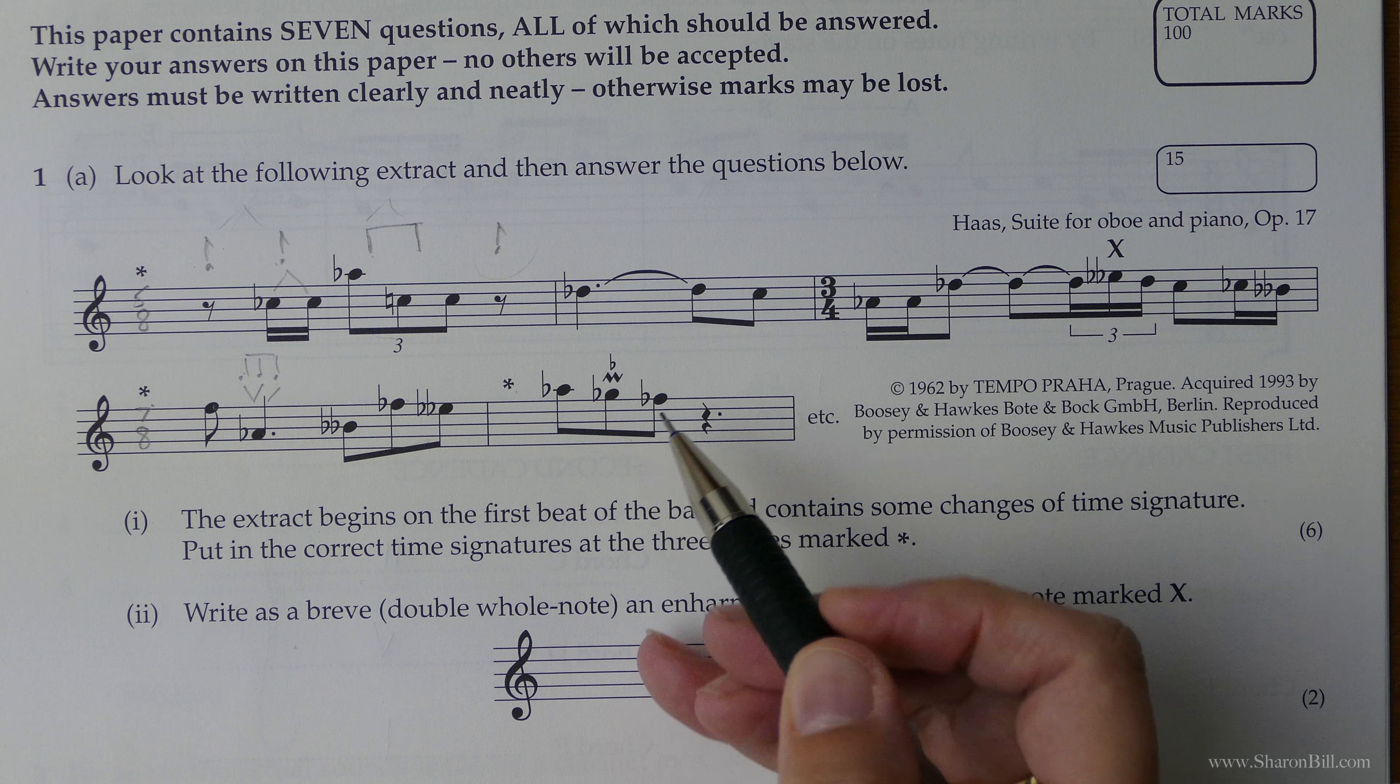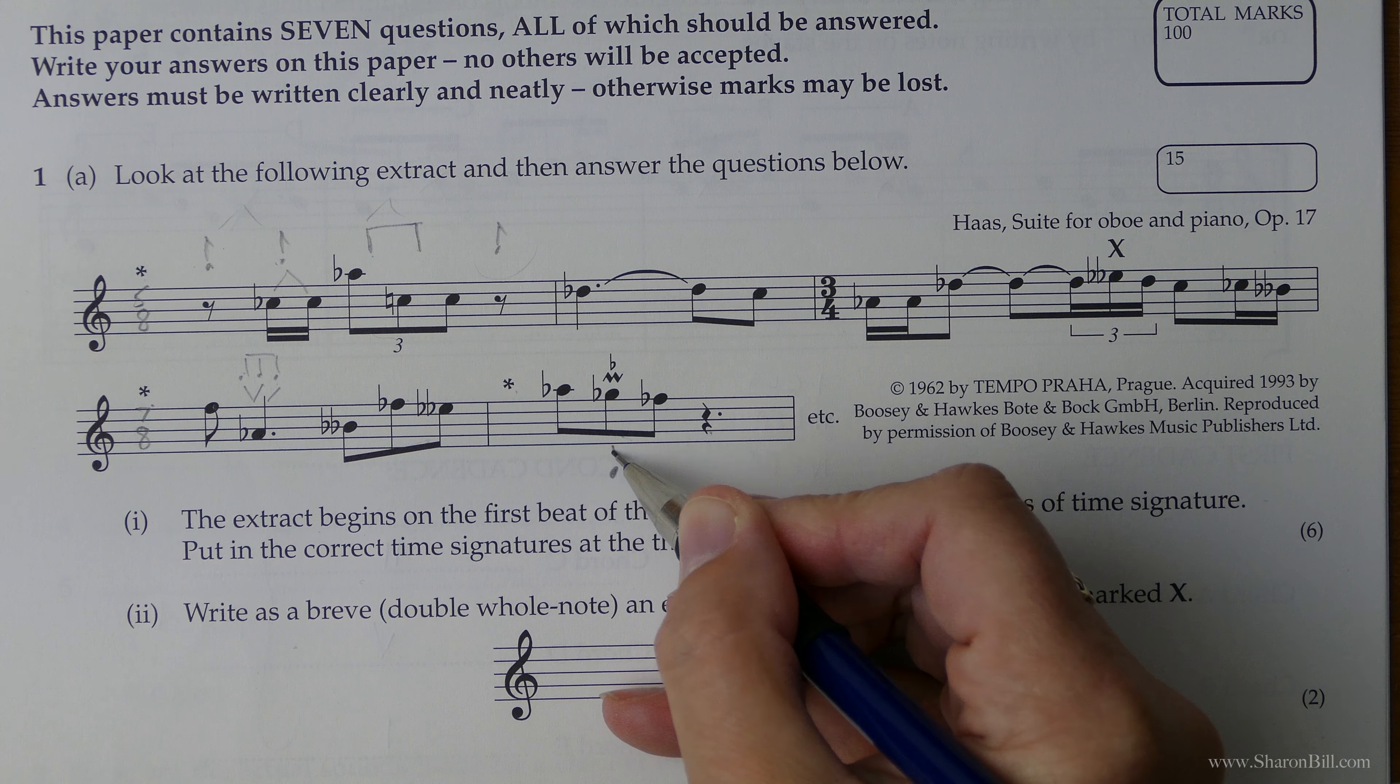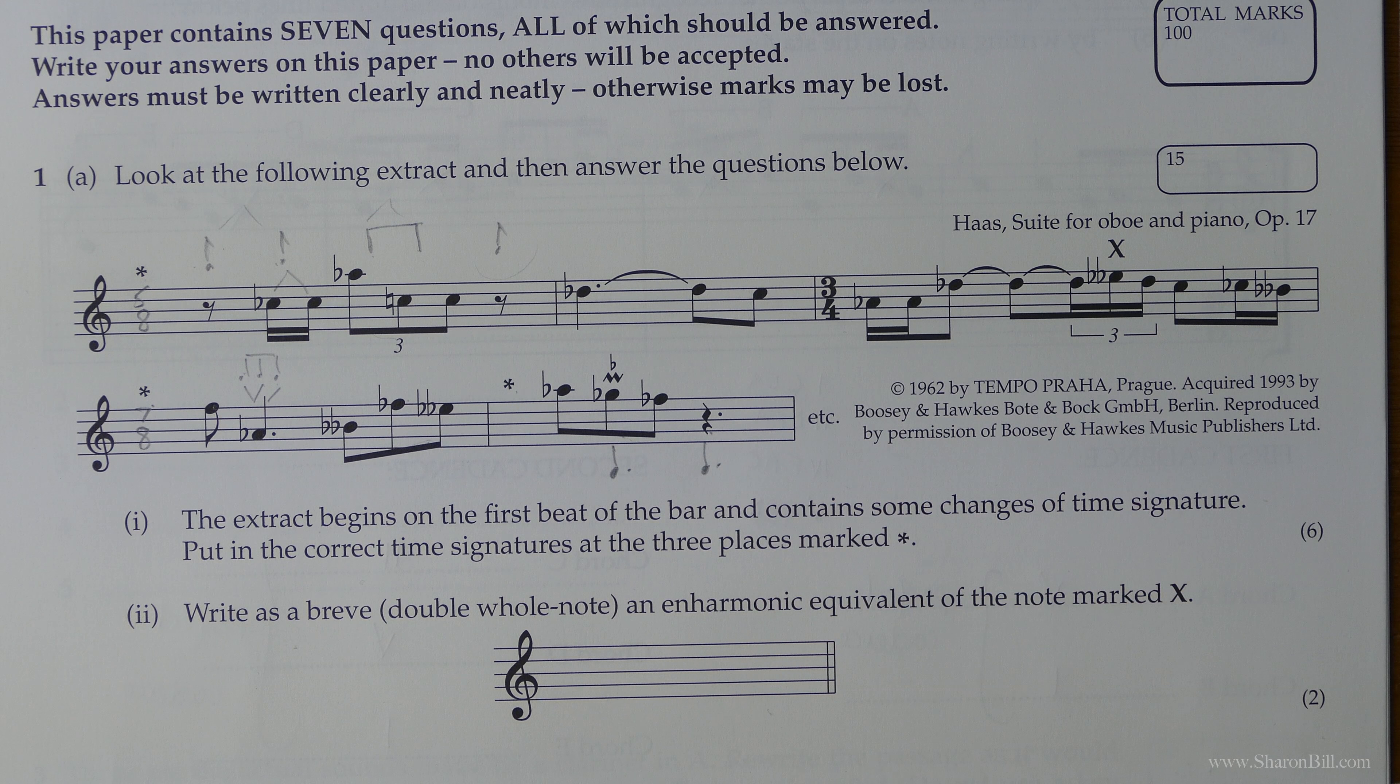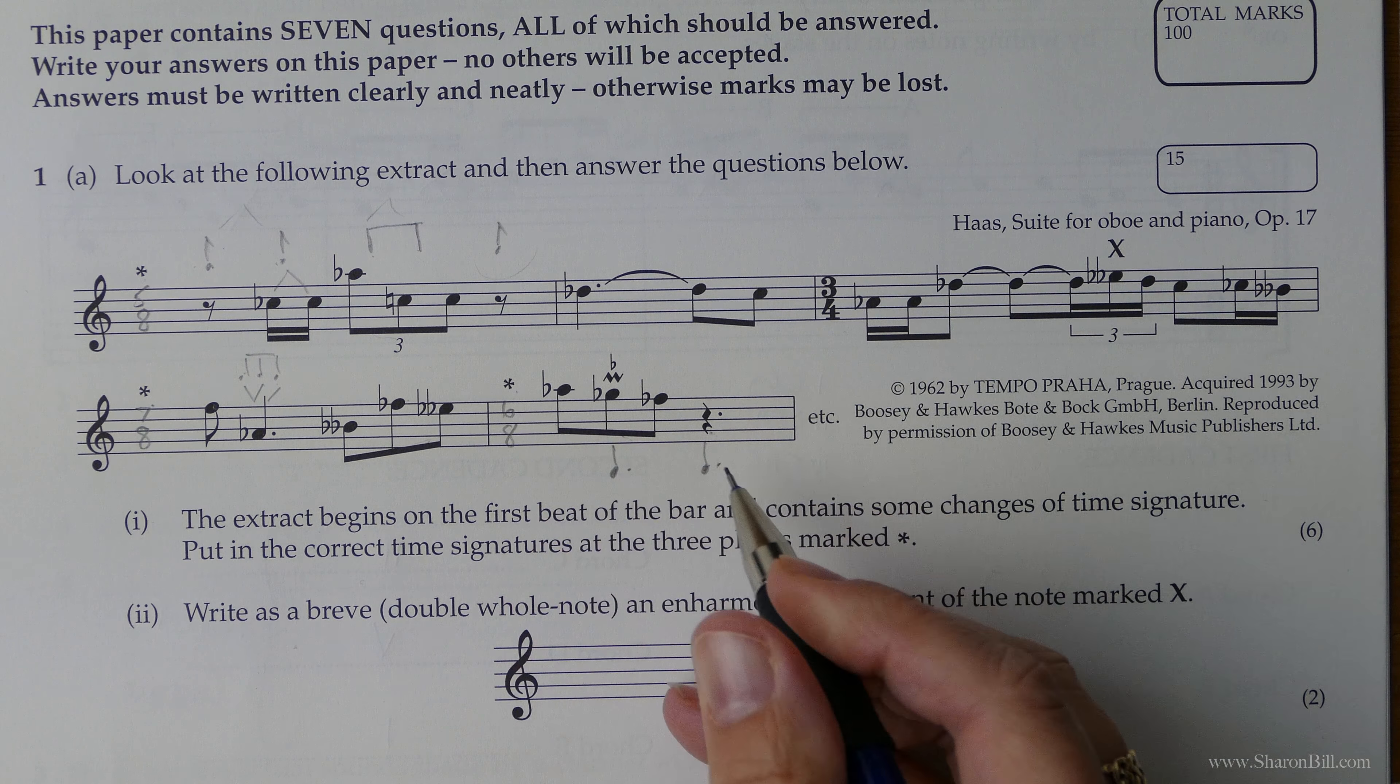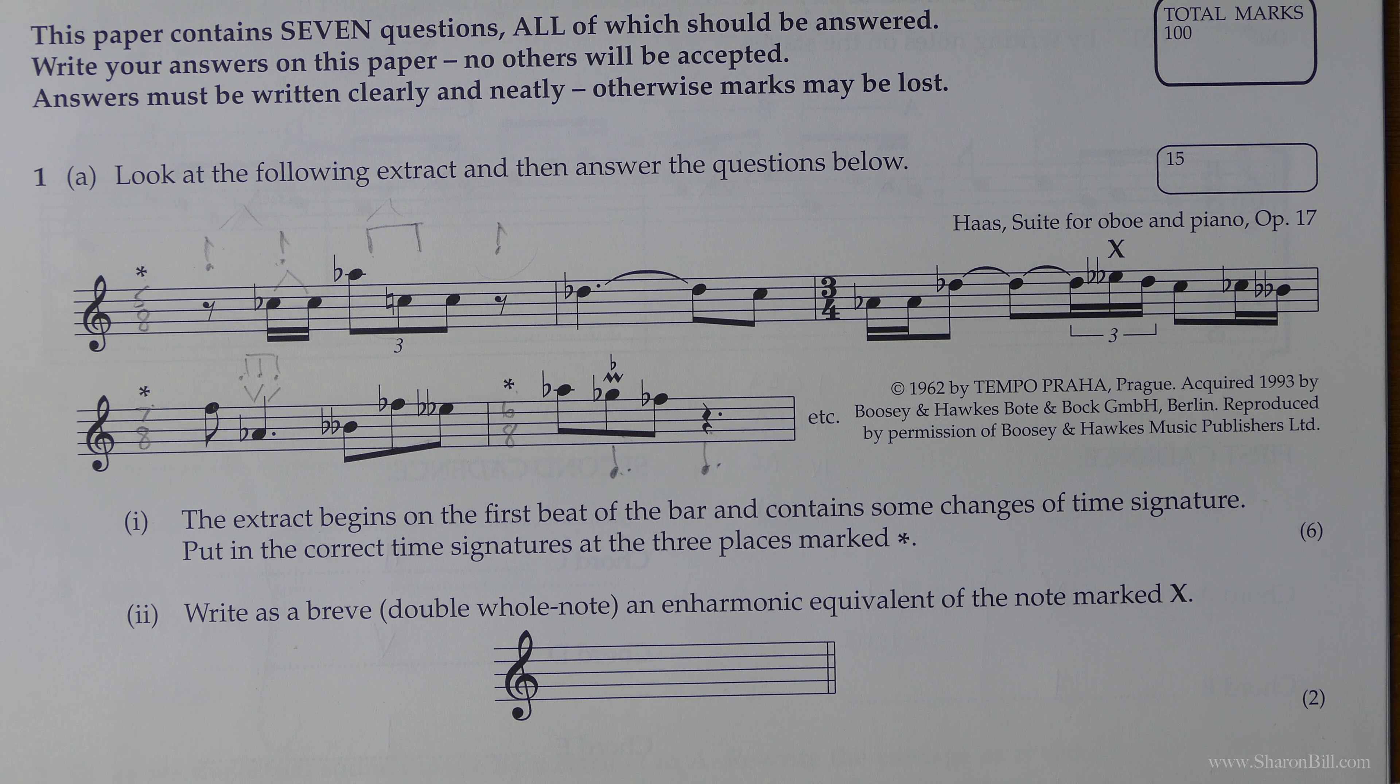Again, easy peasy to count. Now here we can see we've got a group of three here and a group of three here. So we're in a nice regular compound time signature there. We've got one, two, three, four, five, six. We've got six over eight, which means that there are two groups of three. So that's soon done. You've just got to count carefully.